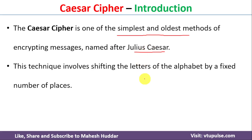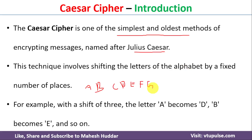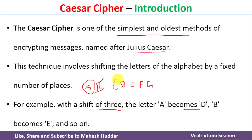This technique involves shifting the letters of the alphabet by a fixed number of places. For example, with a shift of 3, the letter A becomes D. Here we can see that the shift is 3 and the letter is A — we need to shift 3 times, so the encrypted letter will be D.